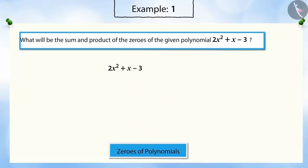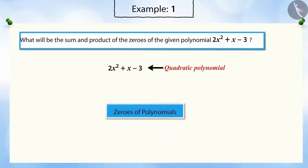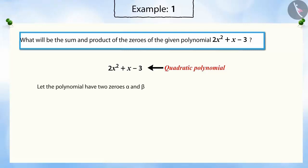Correct answer! Because it is a quadratic polynomial, it can have at most two zeros. Let's assume the polynomial has two zeros, alpha and beta.